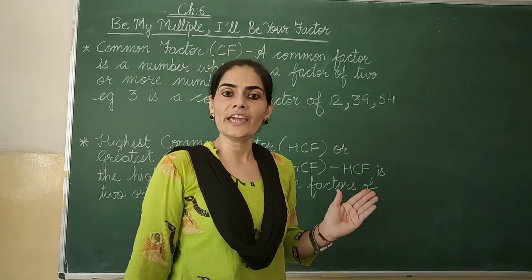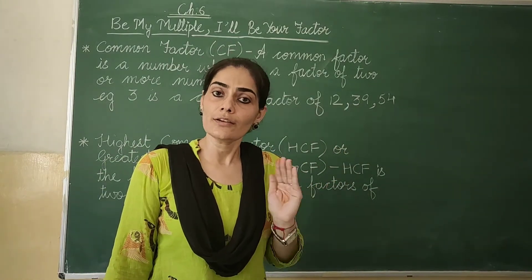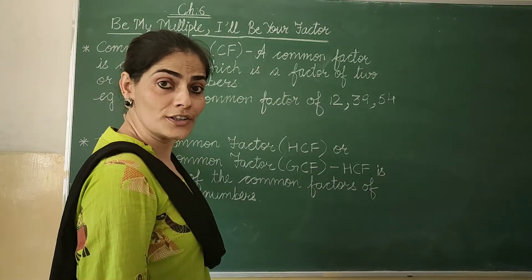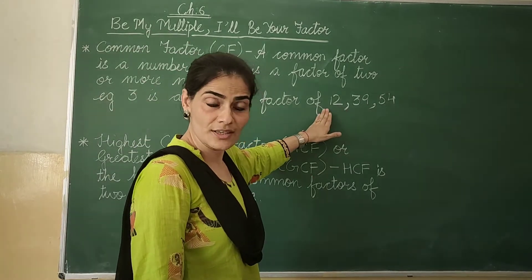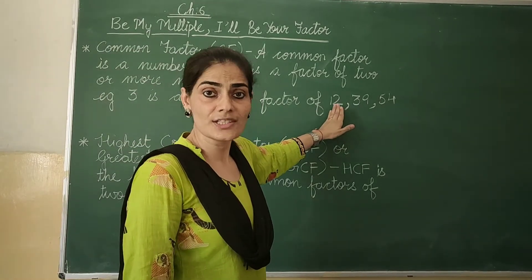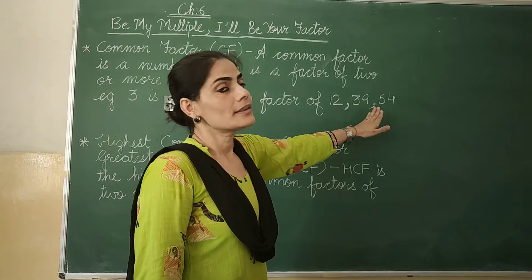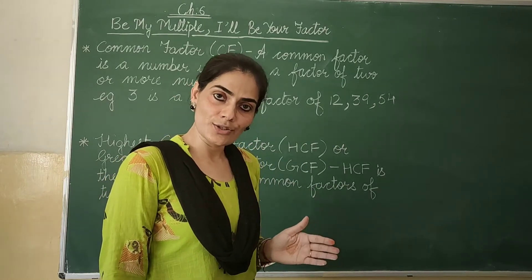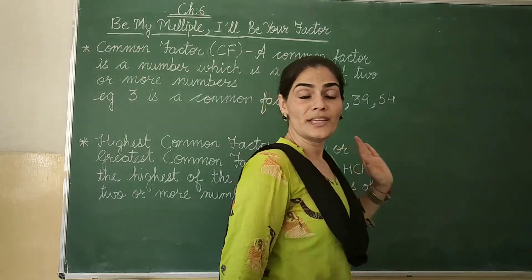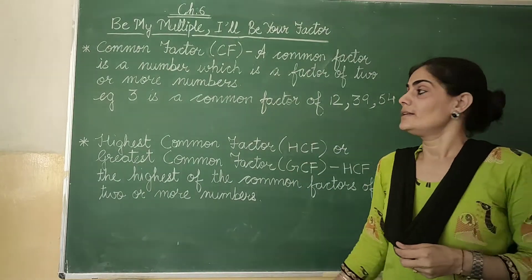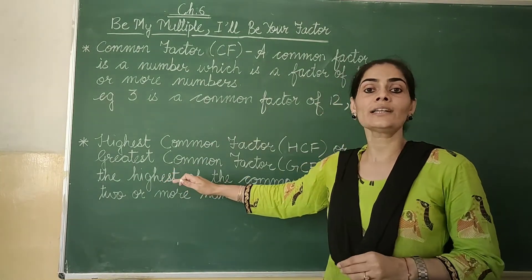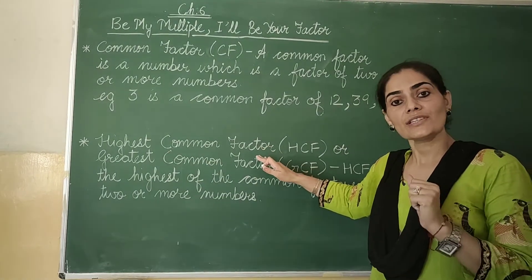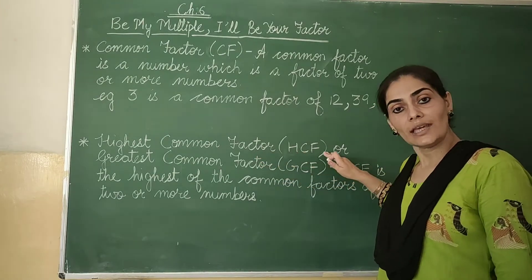Another way to check is by applying the divisibility rule. When we want to check divisibility by 3, we first find the sum of the digits. If the sum of the digits is divisible by 3, then the number is also divisible by 3. So now you know the meaning of common factor.